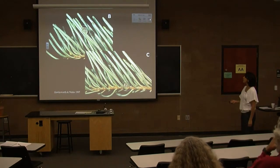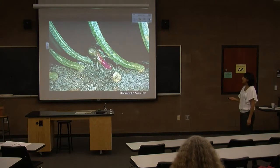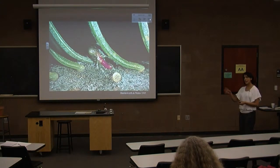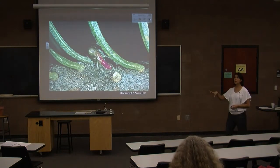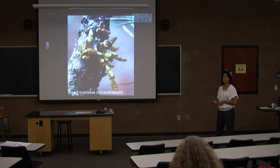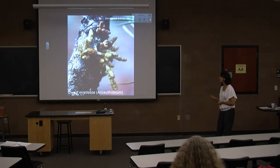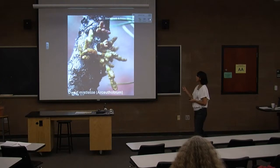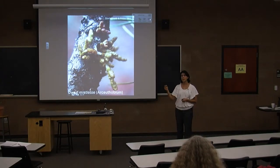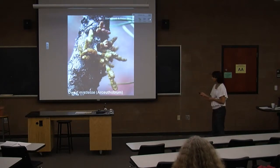Once the seed finds where it needs to go, it makes its way to the branch where it germinates. But once it gets in there, it stays hidden for about four years before the first branches emerge — sometimes it's hard to tell if you have an infection. Some researchers have found a way to do DNA sampling to detect mistletoe in the host before it's visible.